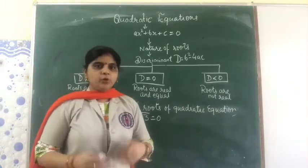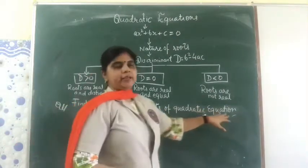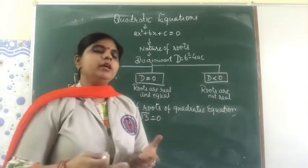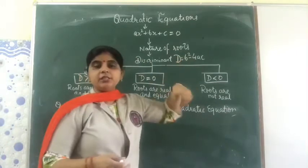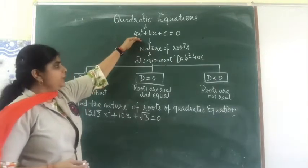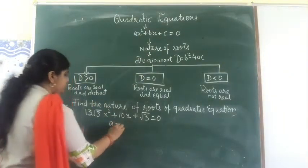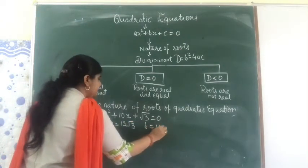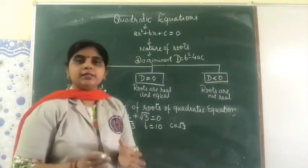Now let us see one more question: find the nature of the roots of a quadratic equation. To find the nature, we need to determine whether the roots are real and distinct, real and equal, or not real. We can decide that by finding the value of D = b² - 4ac. First we compare to identify a, b, and c. When I compare, I get a = 13√3, b = 10, and c = √3. Note that if there is a negative sign you must consider that as well.